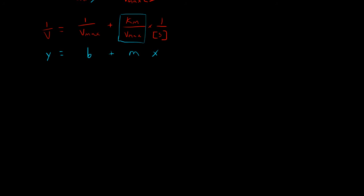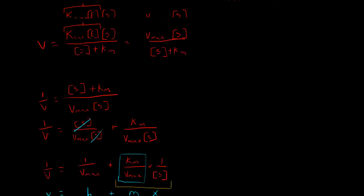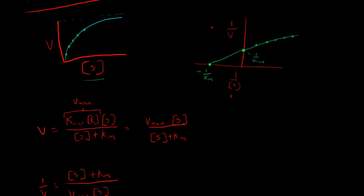So in the case of the y intercept, we can set our x to zero. And in fact, that'll cancel out this whole figure here. And at our y intercept, when x is equal to zero, we have one over velocity is equal to one over Vmax, just as we had pointed out in the graph here. So one over Vmax.